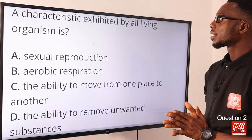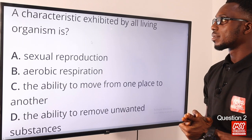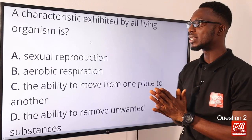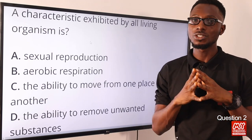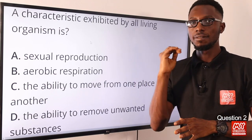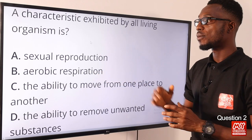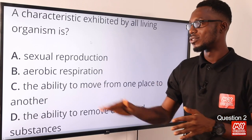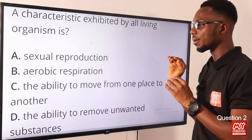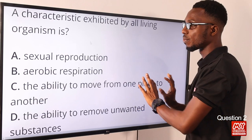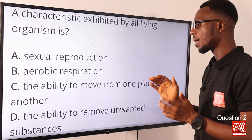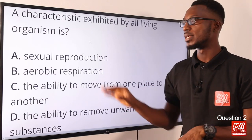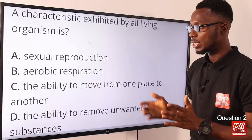Question two: a characteristic exhibited by all living organisms. Sexual reproduction doesn't apply to all — fungi can reproduce asexually. Aerobic respiration is cancelled because organisms like yeast carry out anaerobic respiration. The ability to move from one place to another doesn't apply to plants. The ability to remove unwanted substances — excretion — is applicable to all living things.